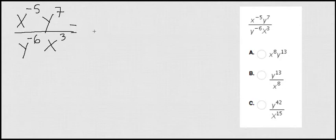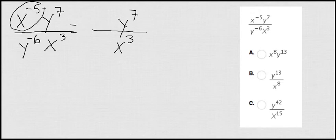So look what I'm going to do. I'm going to leave the ones that are positive the way they are, because I don't want to touch them. But this x to the negative 5, I'm going to move it to the bottom to make it positive. And this y to the negative 6, I'm going to move it to the top to also make it positive.